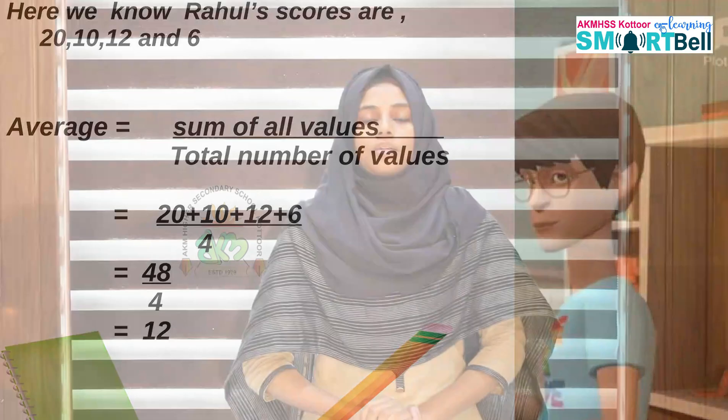Students, here one thing to remember: actual values can be higher or lower than the average value, or equal to the average value. For example, here 12 is the average score. The actual scores are 20, 10, 12 and 6. Here, 20 is higher than the average score, and 10 and 6 are lower than the average score. And also, 12 is equal to our average score. Finally, we helped our Rahul. Now Rahul is very happy and we are also very happy.